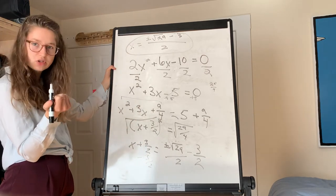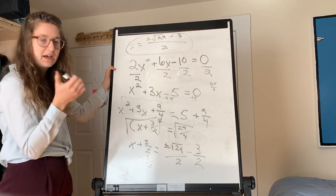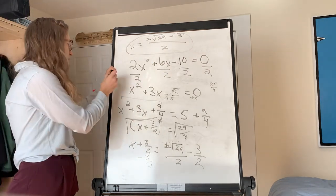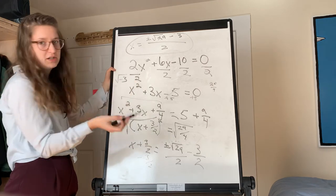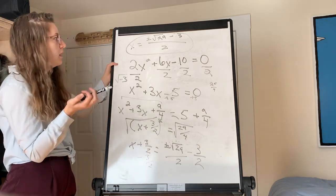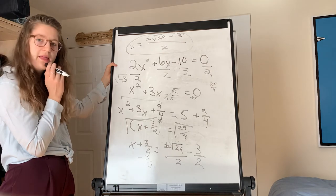In this case, our answers are real because there is not a negative inside our square root. If you got the square root of a negative number, that's fine. It just means that they're imaginary solutions. And that's it.